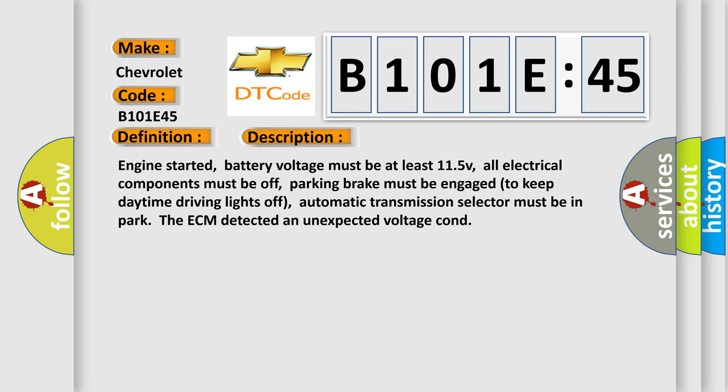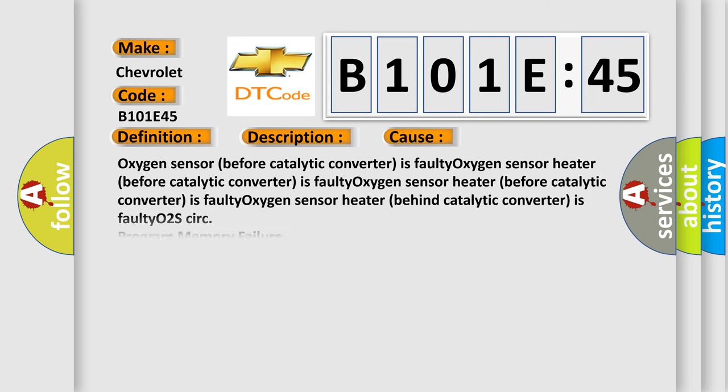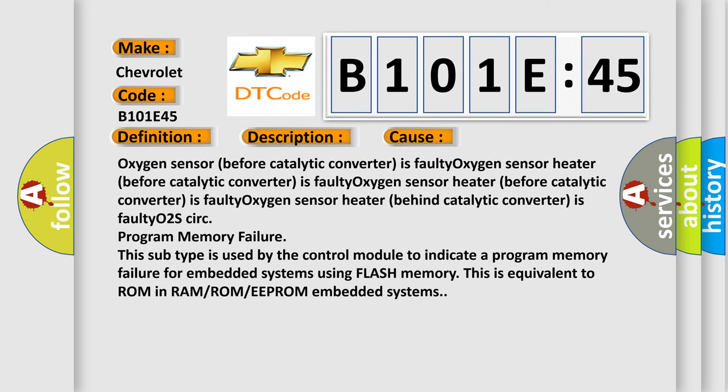This diagnostic error occurs most often in these cases: Oxygen sensor before catalytic converter is faulty. Oxygen sensor heater before catalytic converter is faulty. Oxygen sensor heater behind catalytic converter is faulty. O2S CERC program memory failure. This subtype is used by the control module to indicate a program memory failure for embedded systems using flash memory. This is equivalent to ROM in RAM or ROM or EEPROM embedded systems.